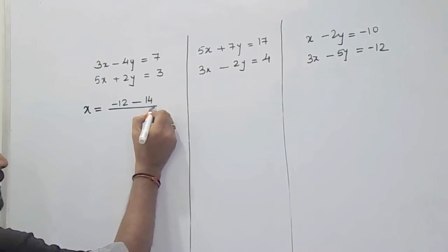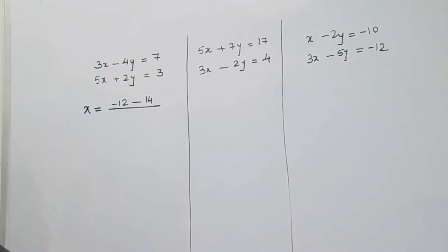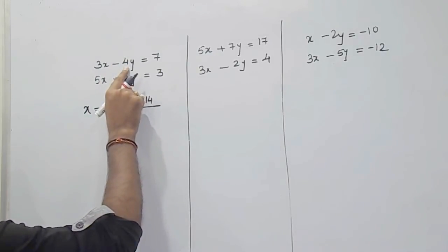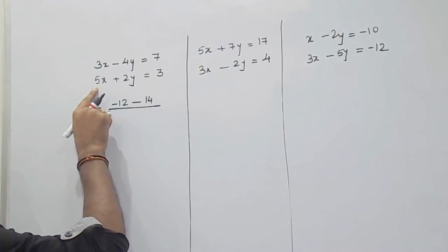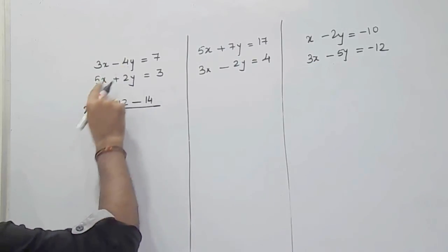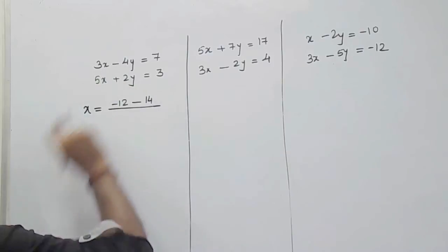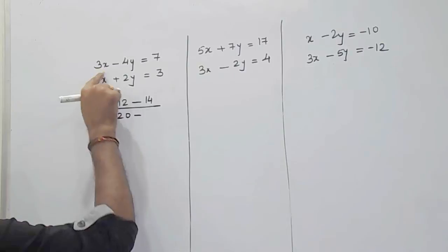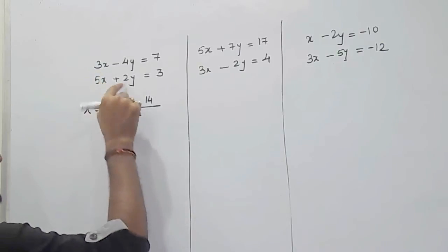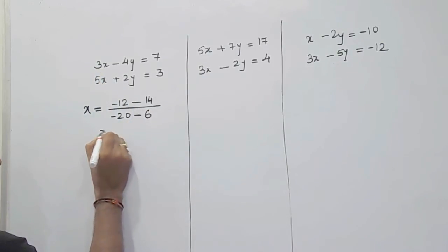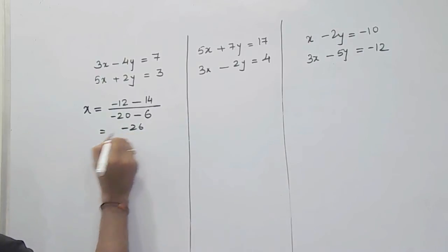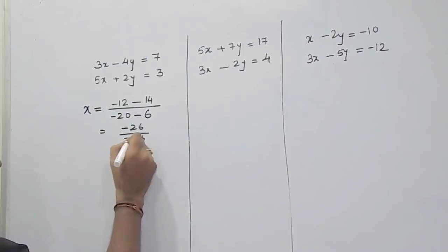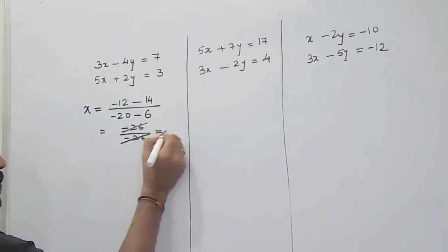For the denominator, cross-multiply the coefficient of y of the first equation and the coefficient of x of the second equation — that is minus 4 into 5, which is minus 20. Then cross-multiply 3 into 2, which is 6. So the denominator is minus 26. The numerator is also minus 26, which cancels out to give 1.